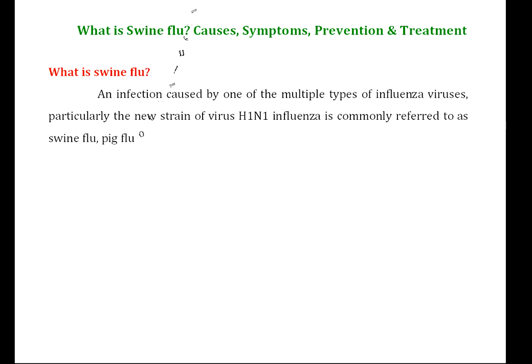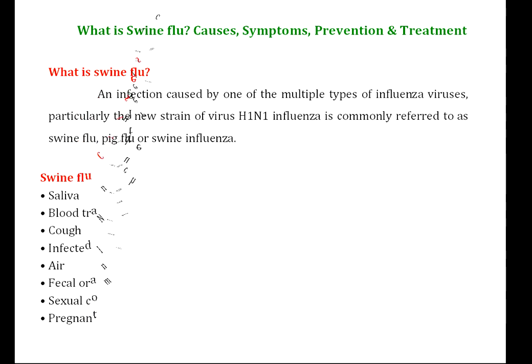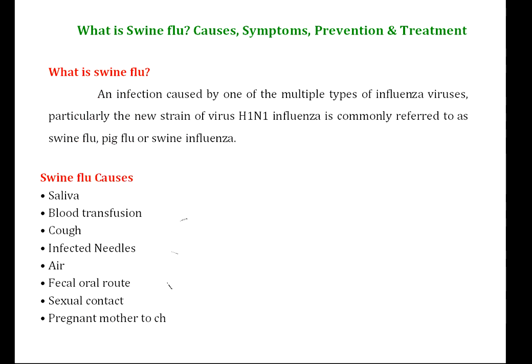Swine flu can spread through saliva, blood transfusion, coughing, infected needles, air, the fecal-oral route, sexual contact, and from a pregnant mother to child.